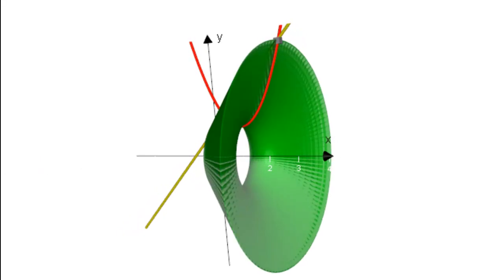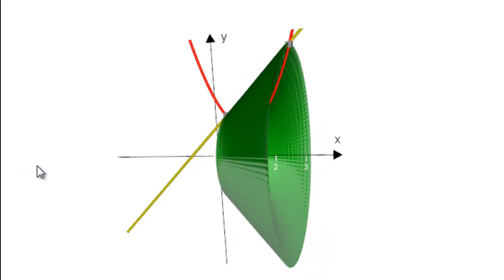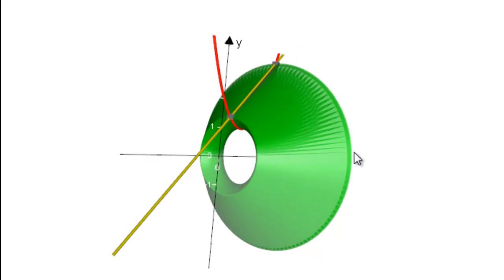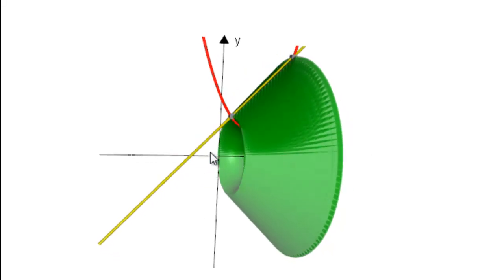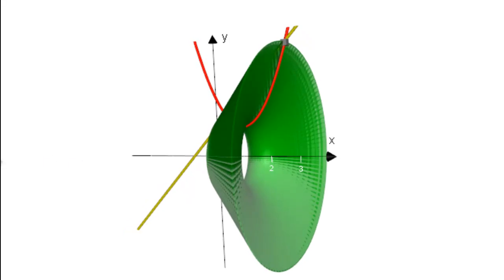You'll notice we generate this solid of revolution, kind of like a funnel with this hollow in it. And in these tutorials, we find volumes like this by using integration methods.